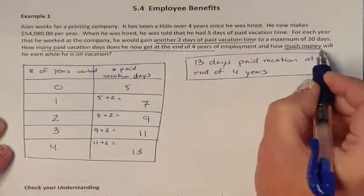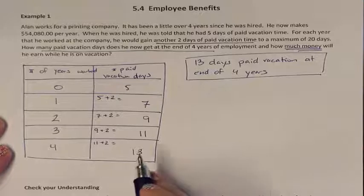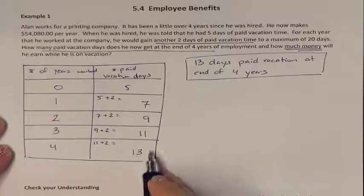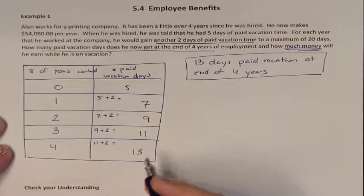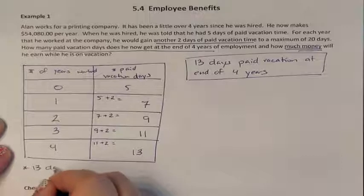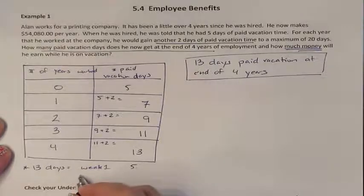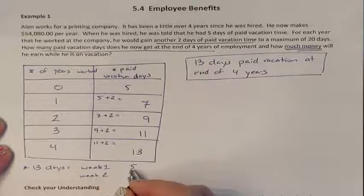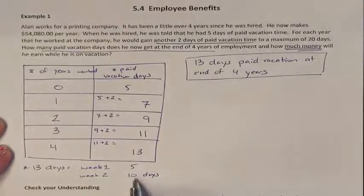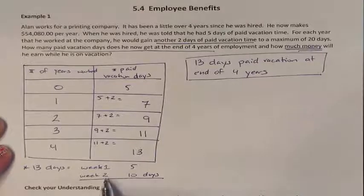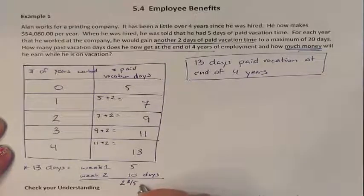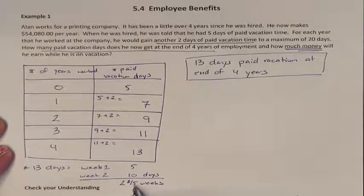Question 2 asks how much money he actually earns on those 13 vacation days. First, we need to figure out how many weeks of work 13 days represents. Since he does not work weekends — only Monday through Friday — week 1 gives him 5 days, week 2 gives him another 5 days for 10 total, and he has 3 days remaining. So he has 2 and 3/5 weeks of paid vacation.